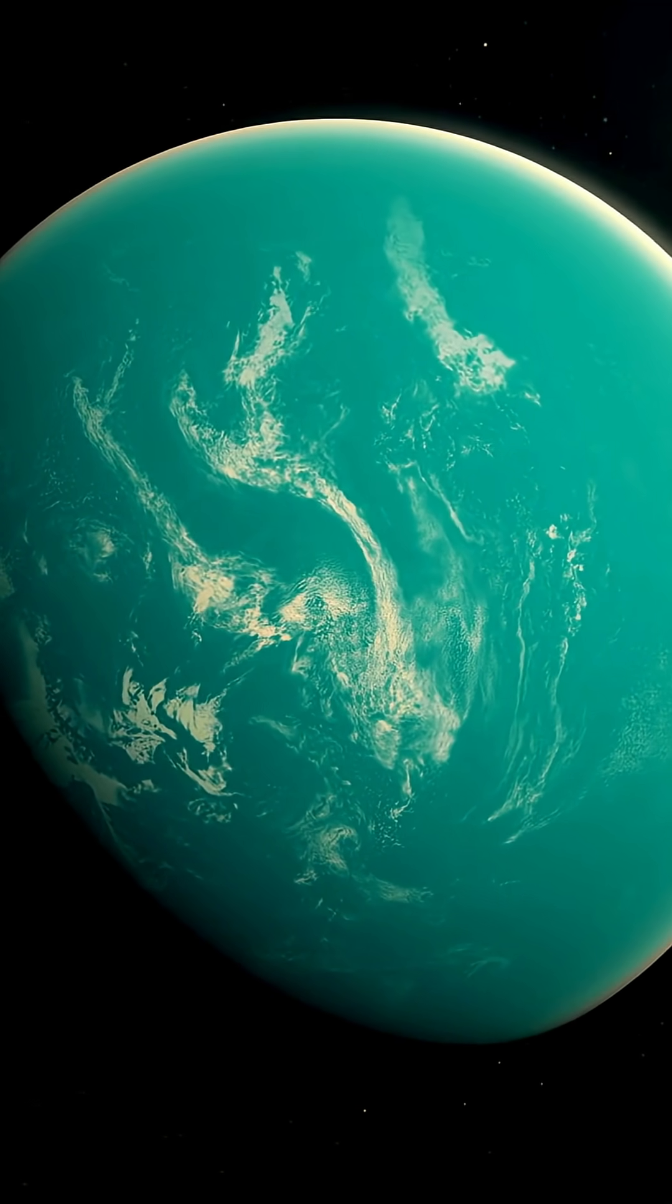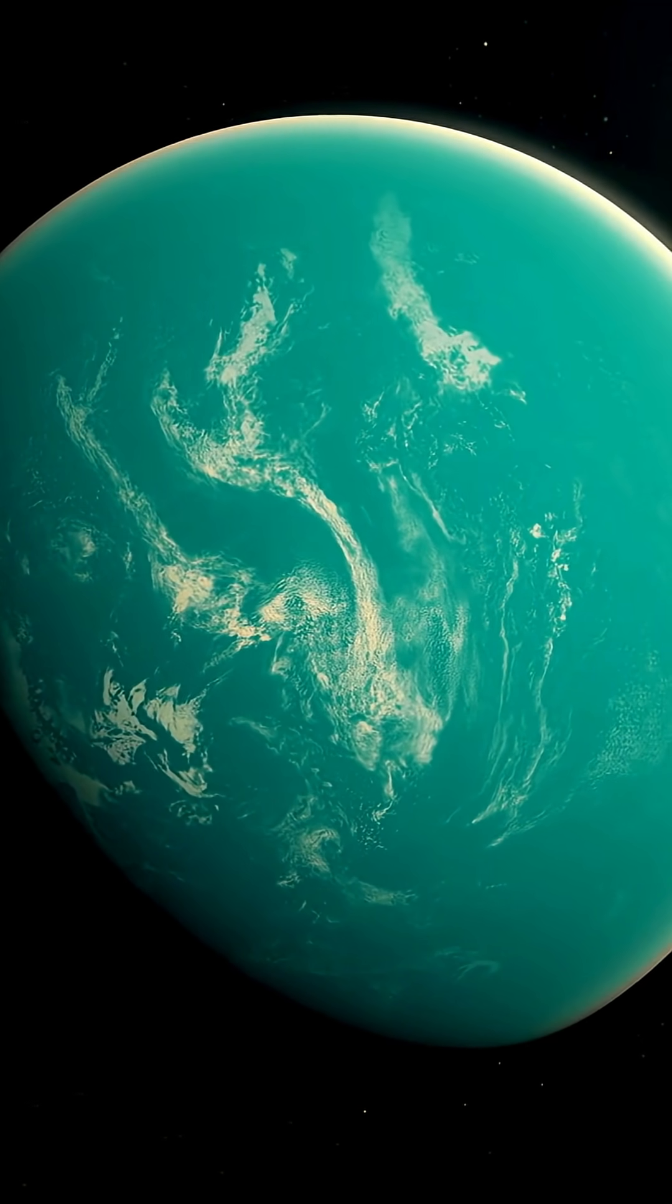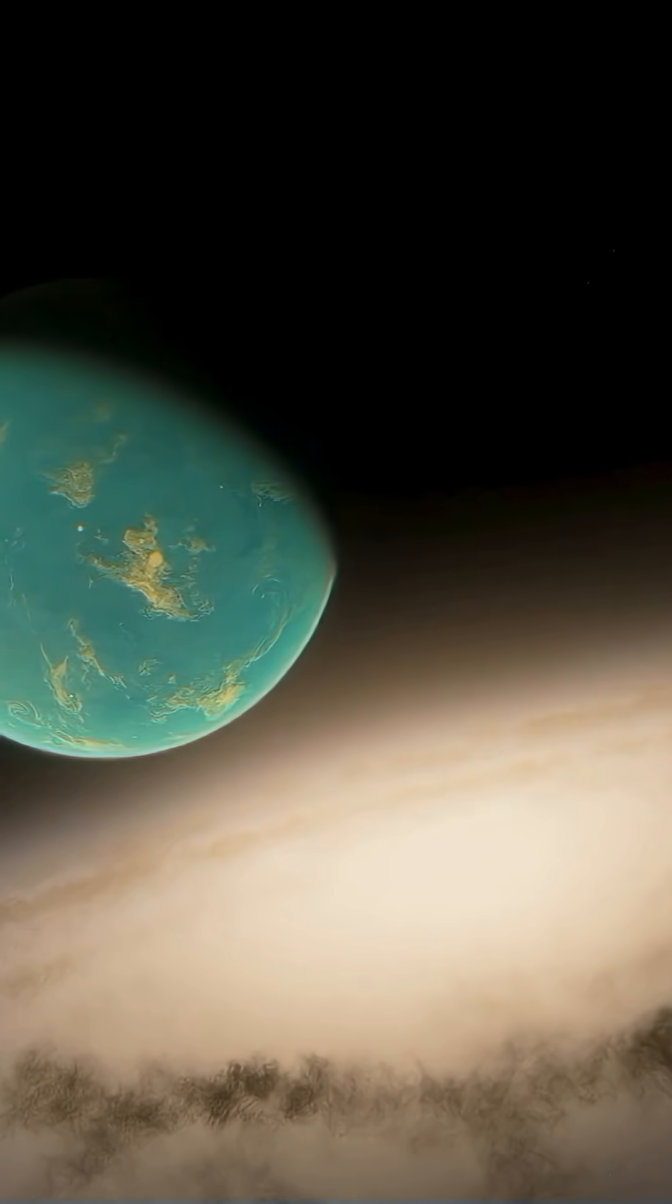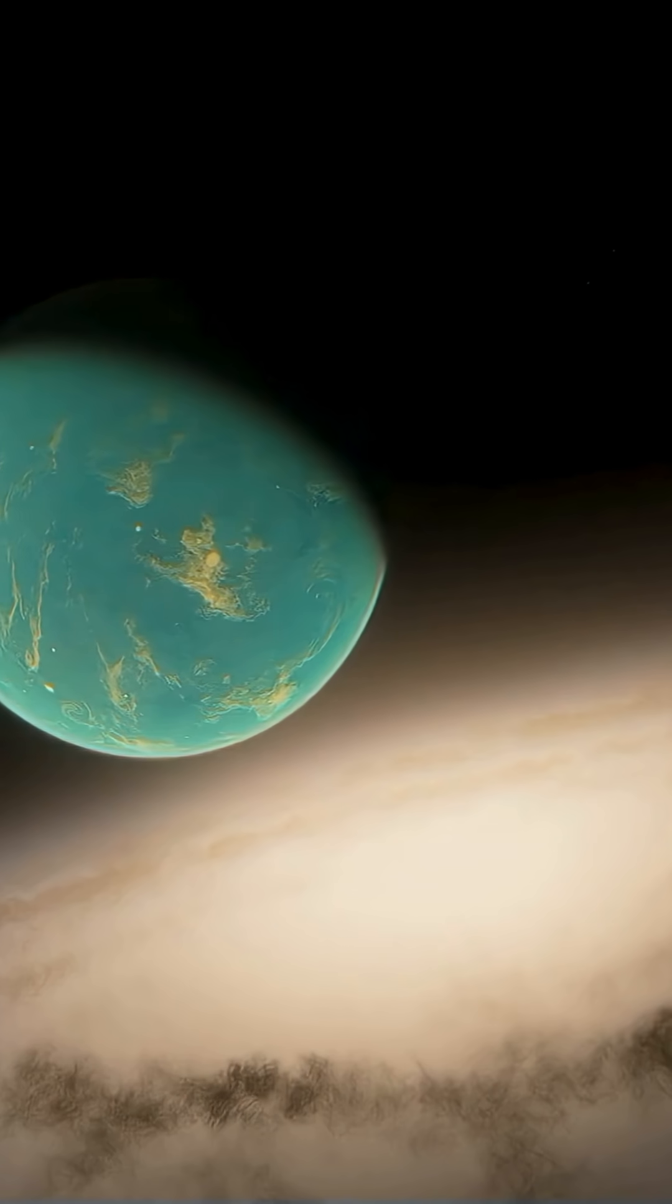This star, only 5 million years old, is surrounded by a thick, swirling disk of gas and dust, slowly building the planets, asteroids, and comets that will shape its system.